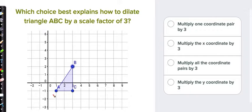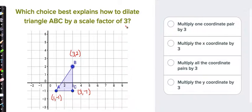Our strategy was to write down all the coordinates. So the coordinates of A would be (1, -1), the coordinates of B would be (3, 2), and the coordinates of C would be (3, -1). Scale factor means to multiply, so we would multiply each of the coordinates by 3. My new A would be (3, -3) if I multiply them both by 3.